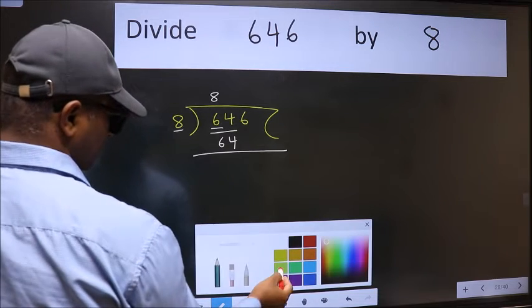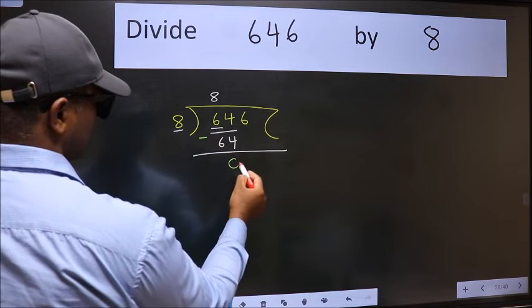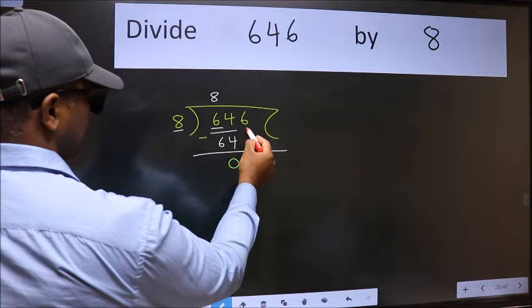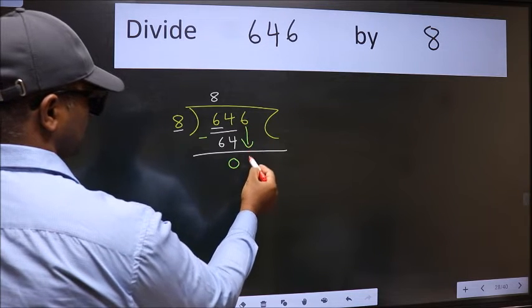Now we should subtract. We get 0. After this, bring down the beside number. So 6 down.